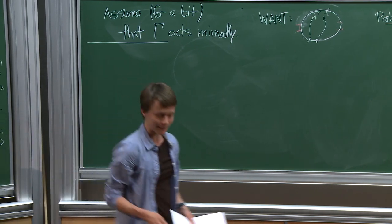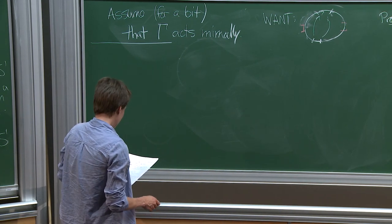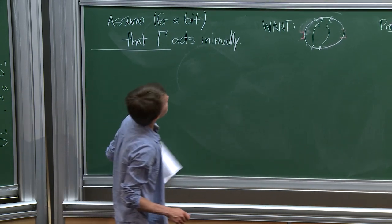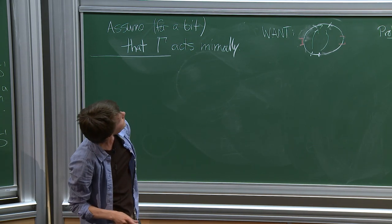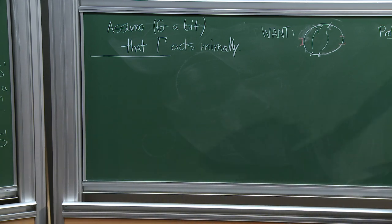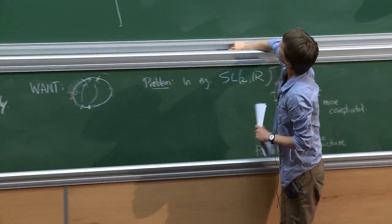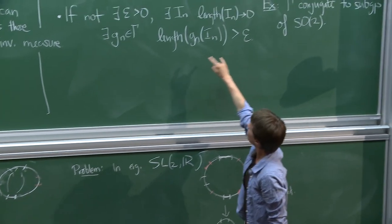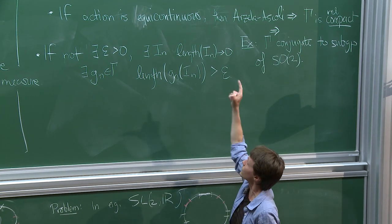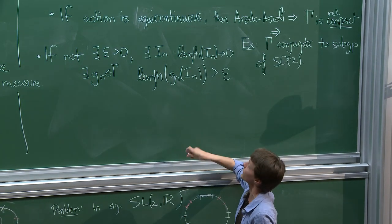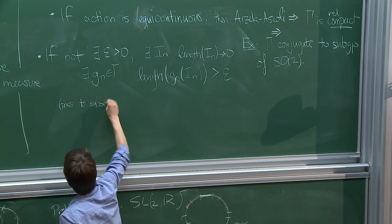If the action wasn't minimal, we have the Cantor set picture. I can apply Cantor's staircase function — collapsing each complementary region to a point — to get a new circle on which the group acts by homeomorphisms. Either the action on this new circle is equicontinuous (pull back an invariant measure) or we can play ping-pong on it (yielding a free group). So assuming minimality is no big deal, and that's a good place to stop. Thanks.